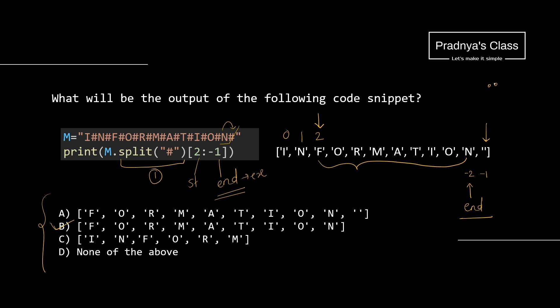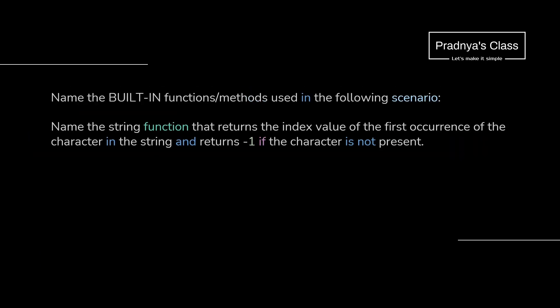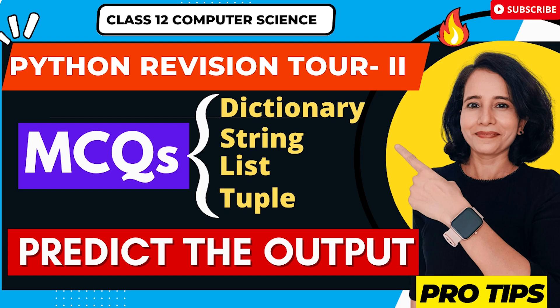Hope you are enjoying this session — if so, don't forget to like the video and share it with your friends. There is one more theory question I'm leaving as your assignment: name the string function which returns the index value of the first occurrence of a character in the string, and returns minus 1 otherwise. Let me know the answer in the comments below. Hope you got an idea of the types of questions you will be getting on strings. If you want to practice more questions, feel free to go through the linked video where we have covered lots of questions from previous sample papers and actual board papers.